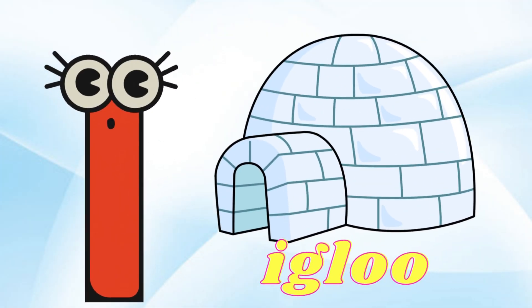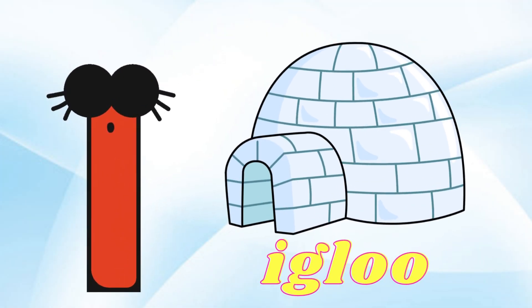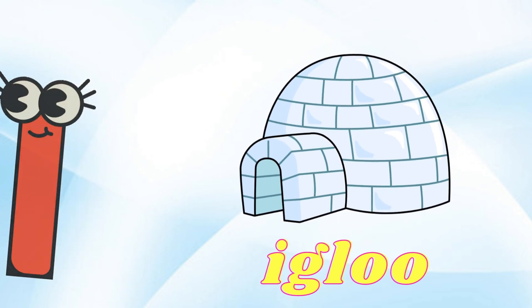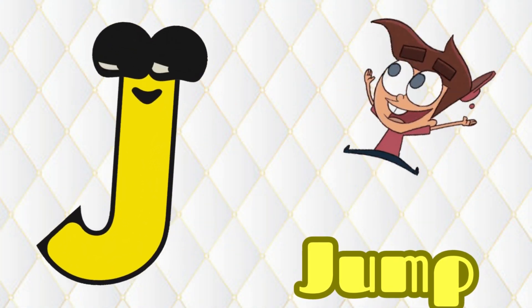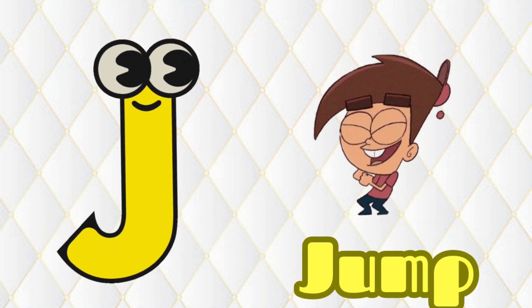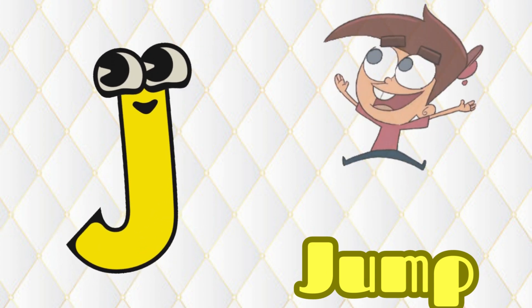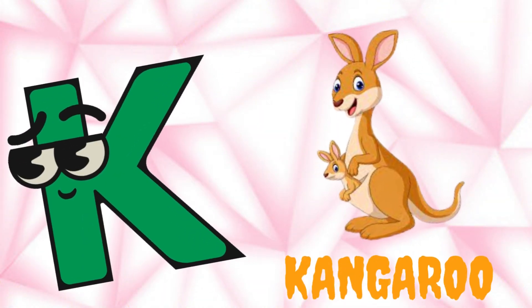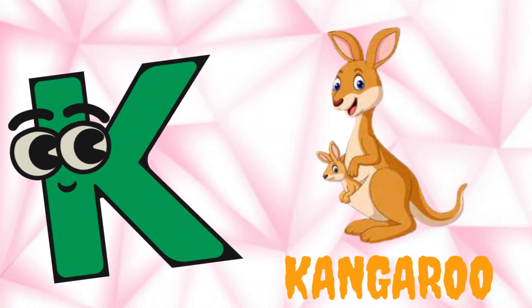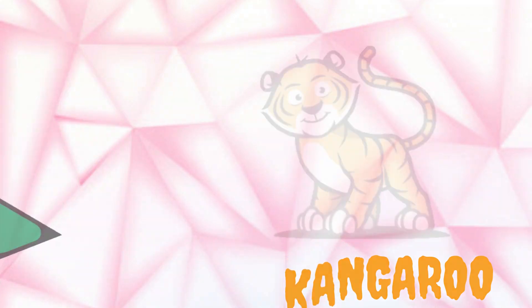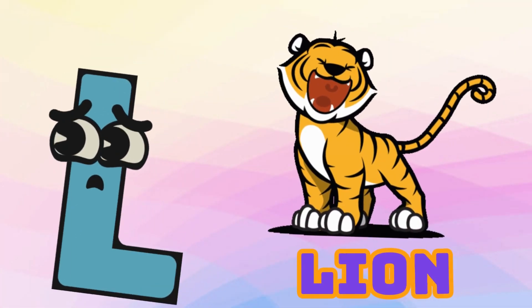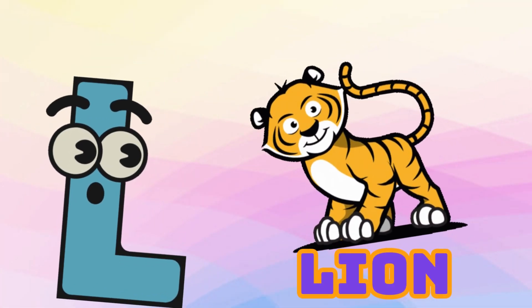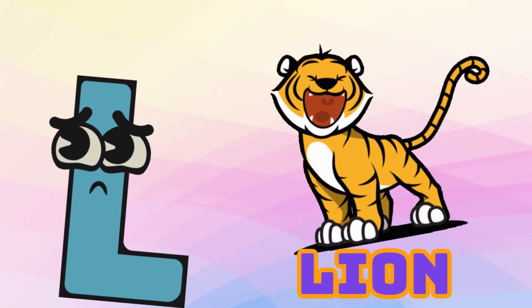I is for Igloo, I-I-Igloo. J is for Jump, J-J-Jump. K is for Kangaroo, K-K-Kangaroo. L is for Lion, L-L-Lion.